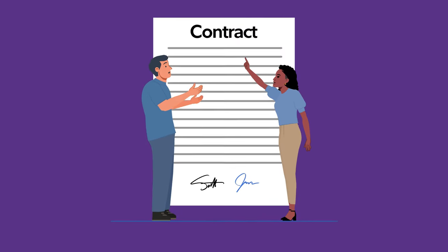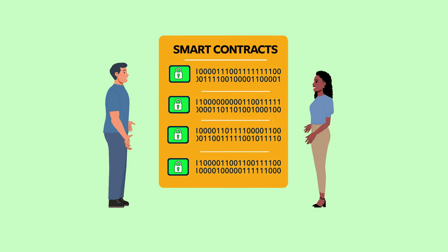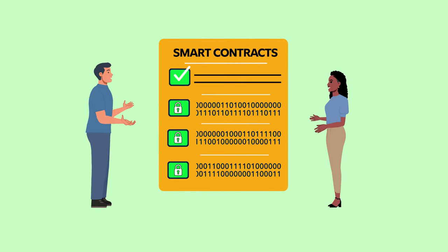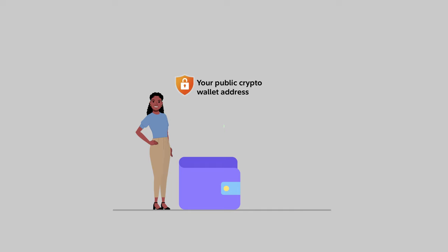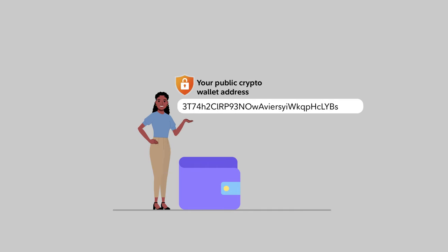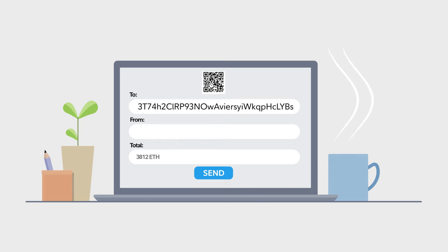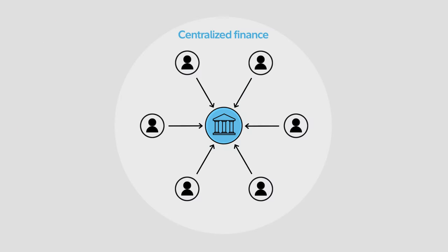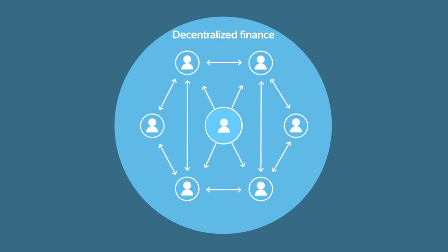Many traditional contracts are intentionally written with subjective language to leave room for interpretation, but smart contracts have clearly defined terms that execute automatically. They can also protect your privacy. Some networks, like Ethereum, are pseudonymous, which means transactions happen under a public address and not your identity.